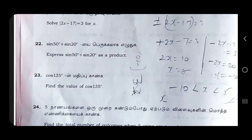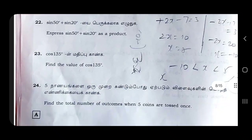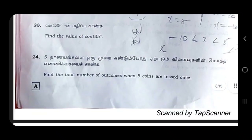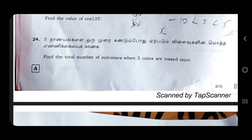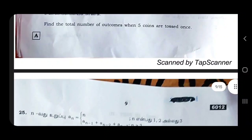The formula is 1 mark. Find the value of cos 135. Find the total number of outcomes when 5 coins are tossed once. So where are the outcomes? If you look at the formula in the sample space.